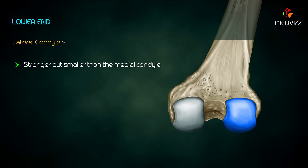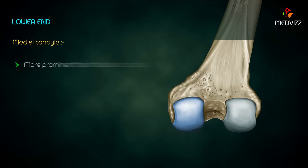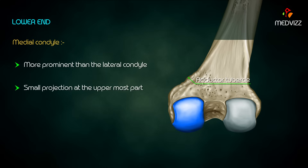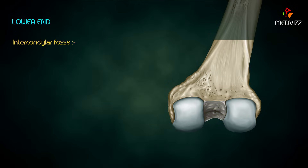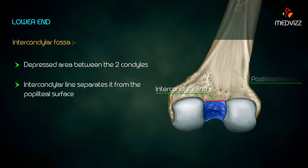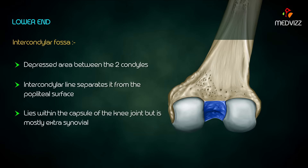The lateral condyle is stronger but smaller than the medial condyle. The lateral epicondyle is a rounded elevation on the lateral side. The medial condyle is more prominent than the lateral condyle. The adductor tubercle is a small projection at its uppermost part. The medial epicondyle is a small elevation lying below and in front of the adductor tubercle. The intercondylar fossa is a depressed area between the two condyles; an intercondylar line separates it from the popliteal surface, and it lies within the capsule of the knee joint but is mostly extrasynovial.